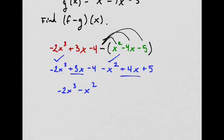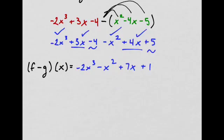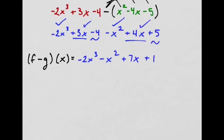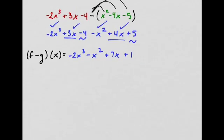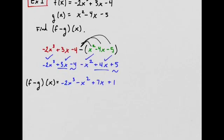The 3x and the 4x, I add those together because those are like terms. Plus 7x. They're both positive. And then I have negative 4 and positive 5. Those are just regular numbers. So I combine those. And that gives me positive 1. Negative 4 plus 5 is 1. So there we have it. F minus g of x equals that polynomial. It's a cubic polynomial. And that's what we get. That's all we're doing. That's it.